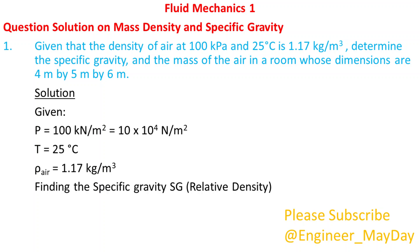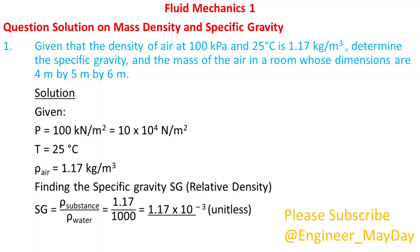Finding the specific gravity Sg, which is also relative density. Sg equals 1.17 times 10 to the power negative 3. Note that specific gravity is unitless since it is a ratio.